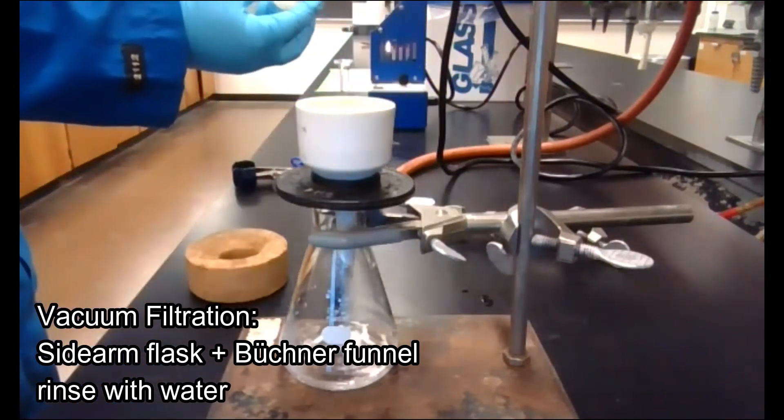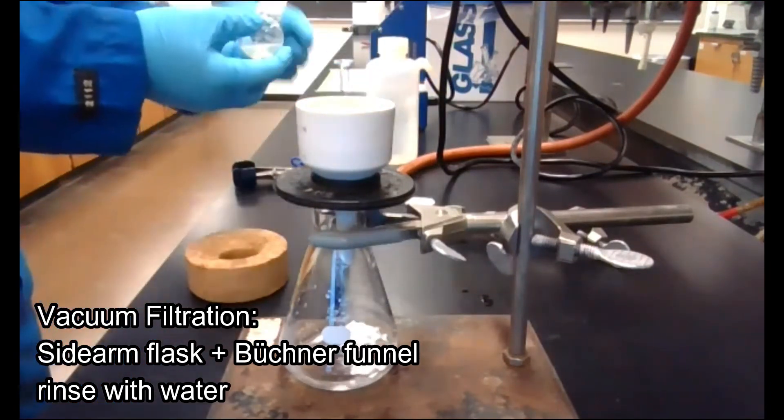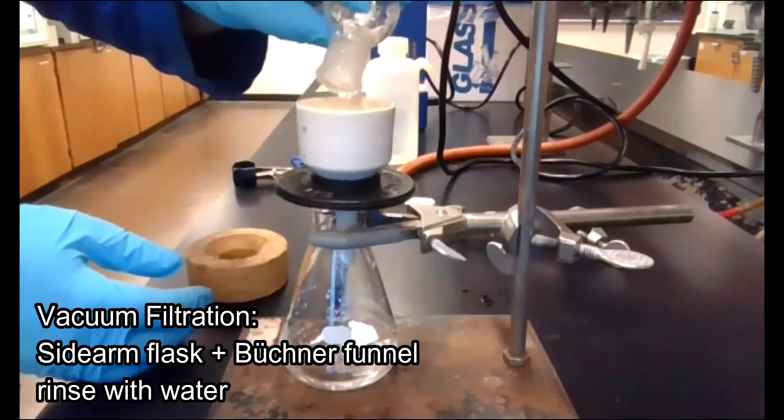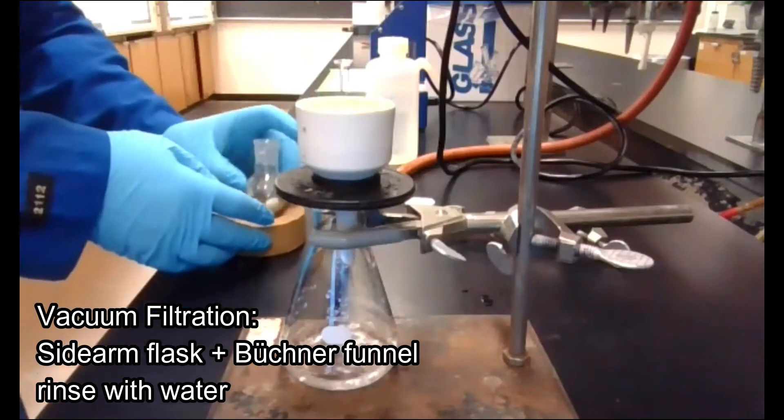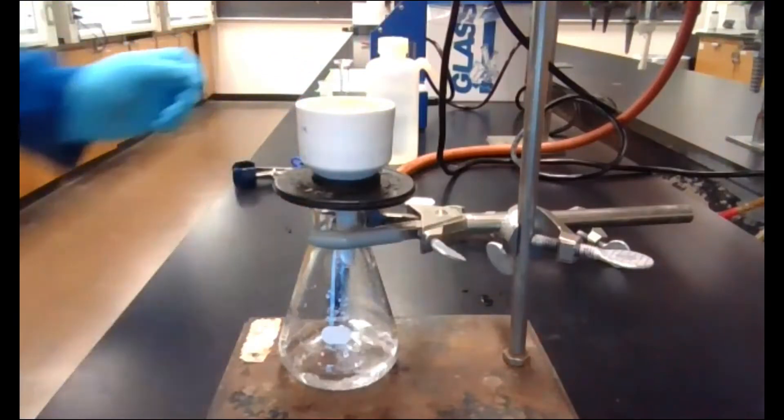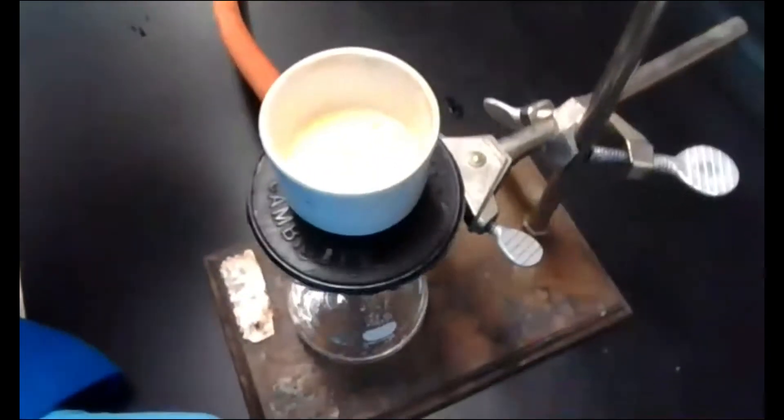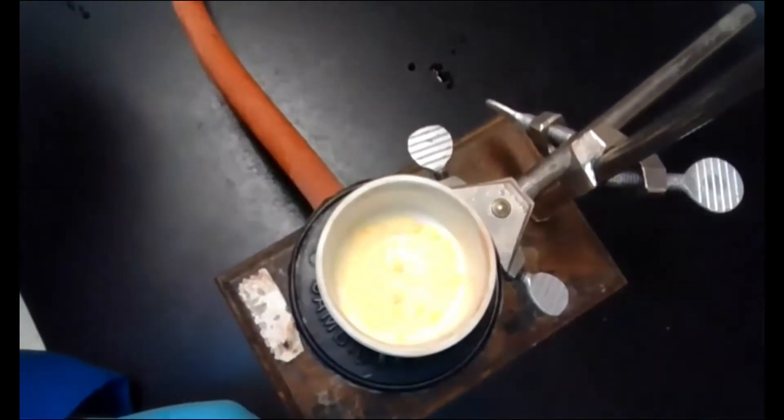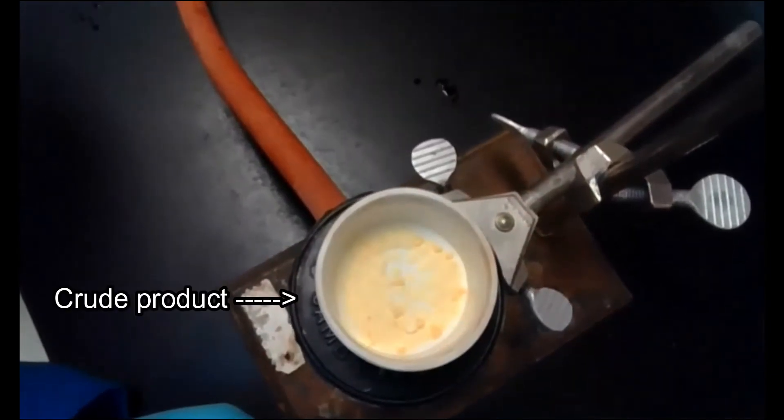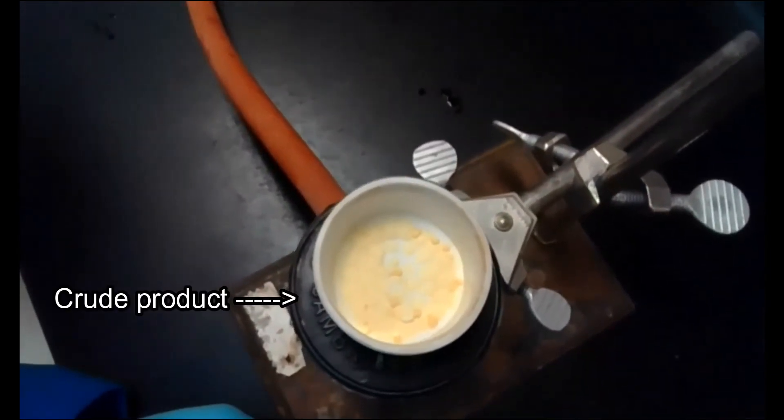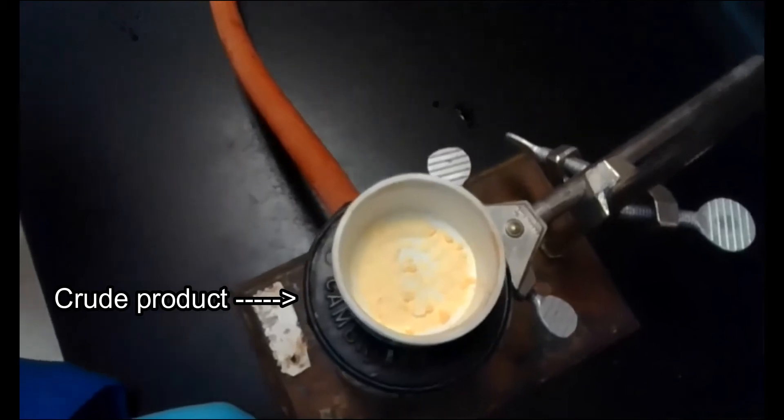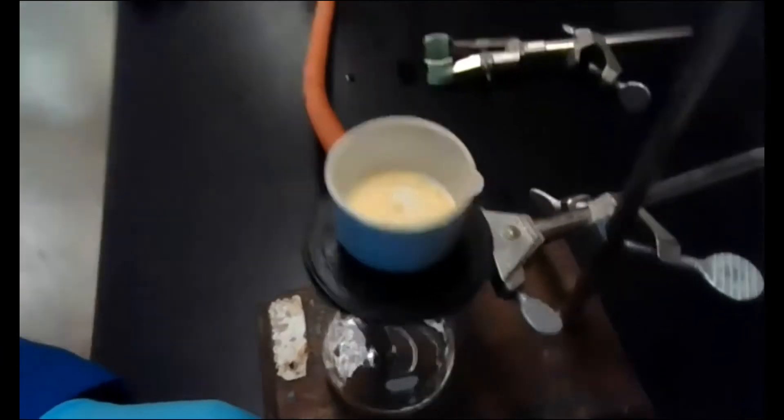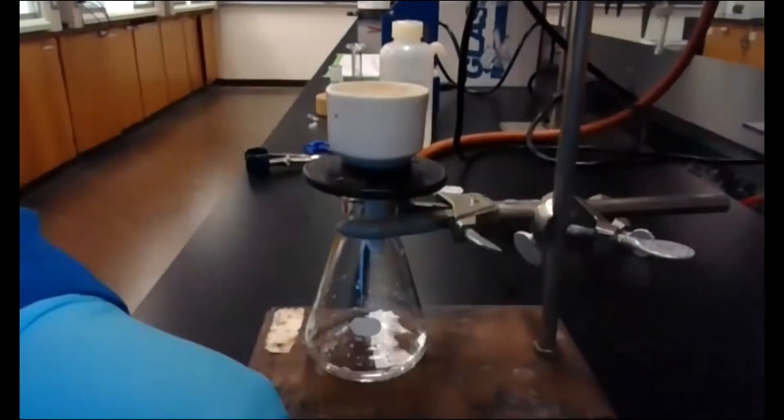I'll do another two mils or so, and we can see our solid in there is kind of yellow. We're going to go ahead and let this air dry for a couple minutes, and we'll get a crude melting point, and then we will recrystallize it. I'll be back when we're ready for that.